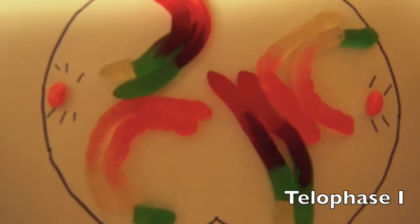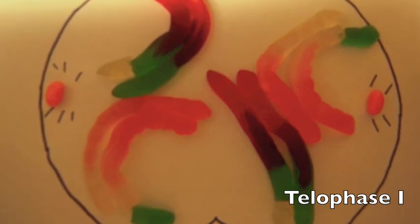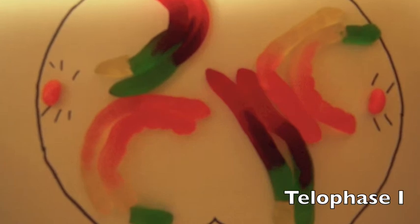Just as seen in mitosis, cytokinesis overlaps with telophase to split the cell into two daughter cells, each containing half of the chromosomes of the parent cell.